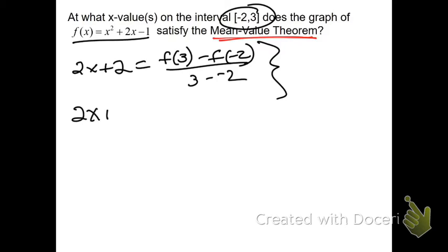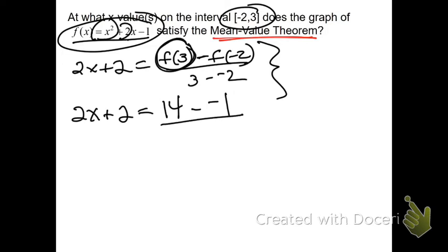Now, calculate that. On the left, 2x plus 2 is still 2x plus 2. On the right, figure out what f(3) and f(-2) are by plugging them in here. f(3) would be 9 plus 6 minus 1. 14, 9 plus 6, yeah. Now, plug in negative 2. Negative 2, that would be 4 minus 4 minus 1. So, that's negative 1.